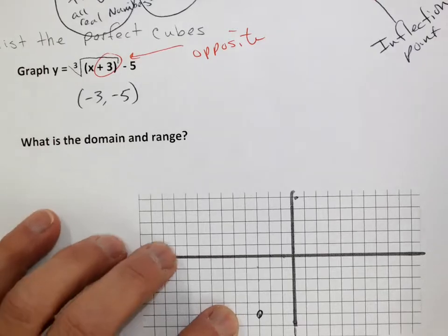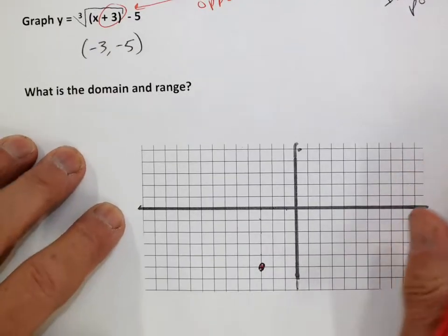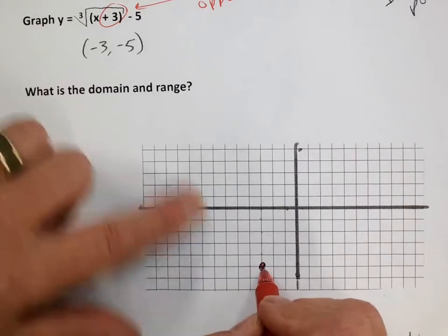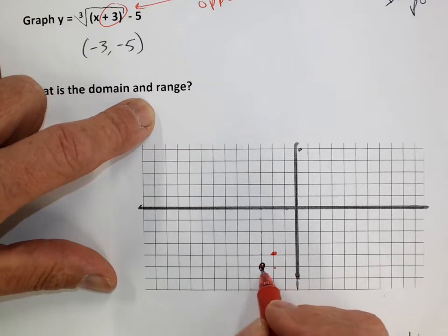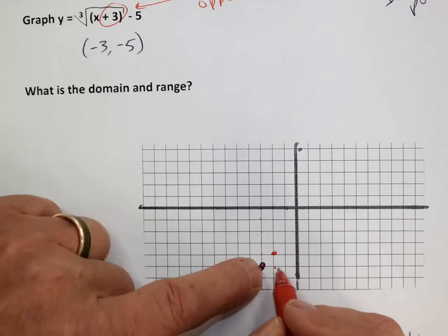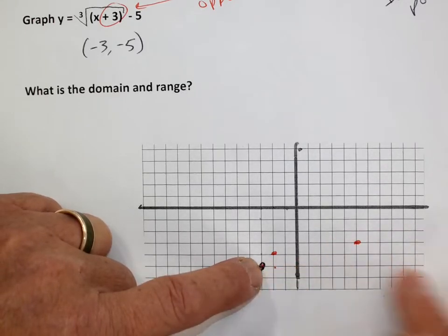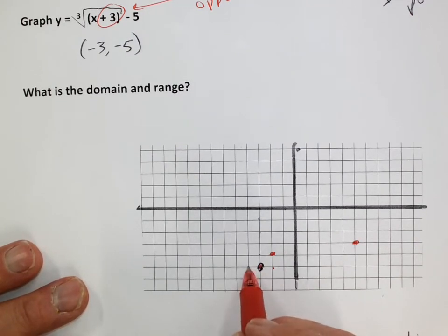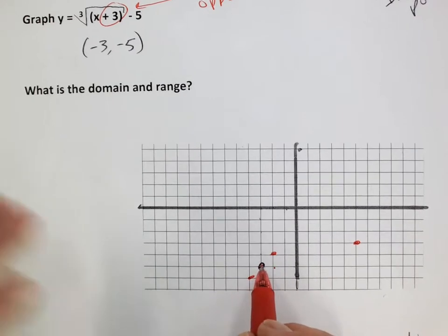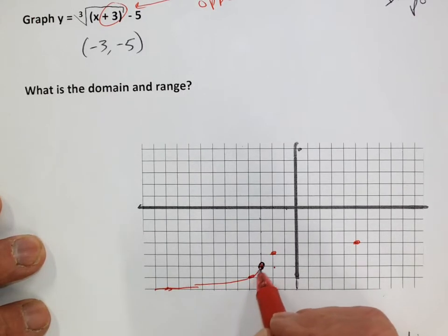I'll use red. Using my perfect cubes: cube root of zero is zero; cube root of one is one; go over eight from the inflection point, cube root of eight is two. Going backwards: cube root of negative one is negative one. Going back eight, cube root of negative eight is negative two. That is my parent function just translated — a horizontal translation of back three and a vertical translation down five.